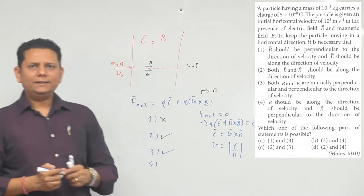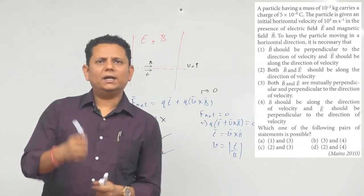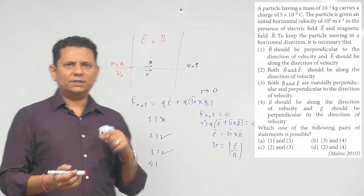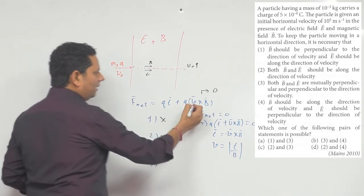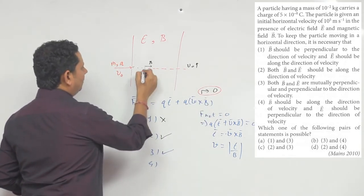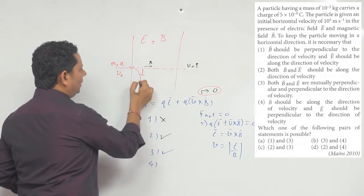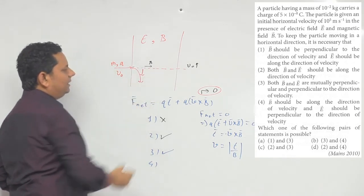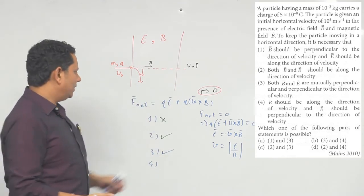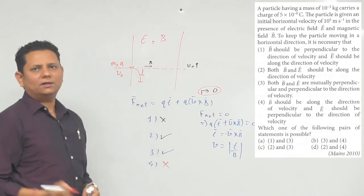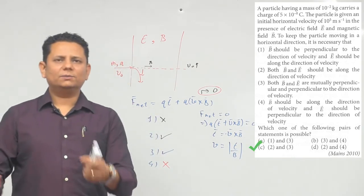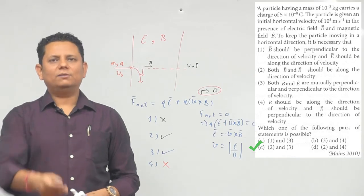Option 4 कहता है: B should be along the direction of velocity and E should be perpendicular to the direction of velocity। अगर B, velocity के along हो गया तो v × B = 0 हो जाएगा। और E perpendicular है तो particle को उस direction में acceleration मिलेगा — motion horizontal नहीं रहेगा। Option 4 possible नहीं है। So based on this, option C — 2 and 3 — would be the right answer।